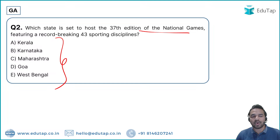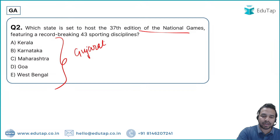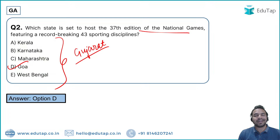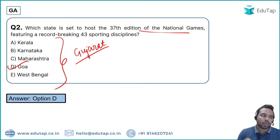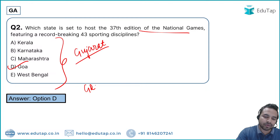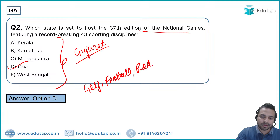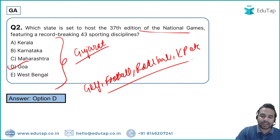The options for the host of the 37th National Games are Kerala, Karnataka, Maharashtra, Goa, or West Bengal. The previous edition was held in Gujarat, but this year Goa will be hosting the 37th edition. Option D — Goa — is the right answer. New sports making their debut in this edition include golf, football, roll ball, and Kalaripayattu.